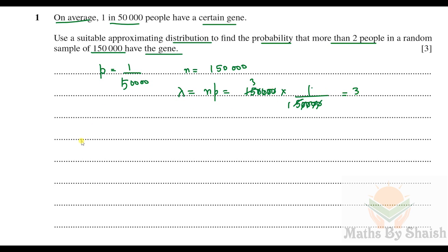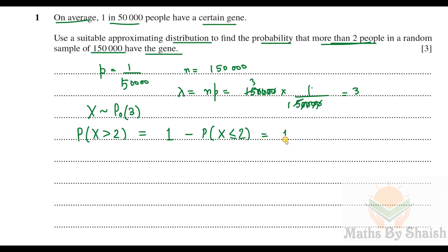X follows a Poisson distribution with parameter λ = 3. We need P(X > 2), which equals 1 − P(X ≤ 2), which is the same as 1 − P(X=0) − P(X=1) − P(X=2). For Poisson, P(X = r) = e^(−λ) × λ^r / r!.